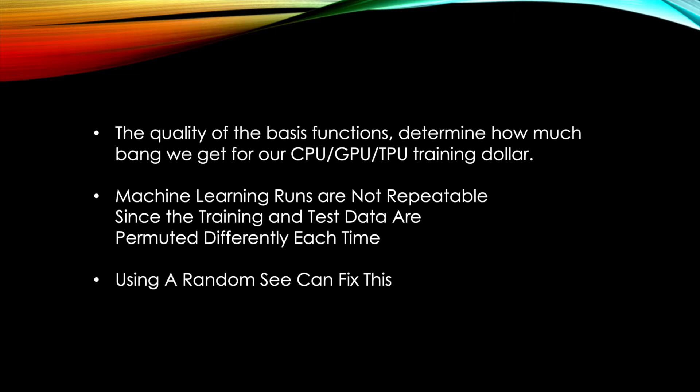So the quality of the basis functions, in short, determine how much bang we get for our CPU, GPU, or TPU training dollar. Machine learning runs are not repeatable since the training and test data are permuted differently each time, but using a random seed we can fix this.